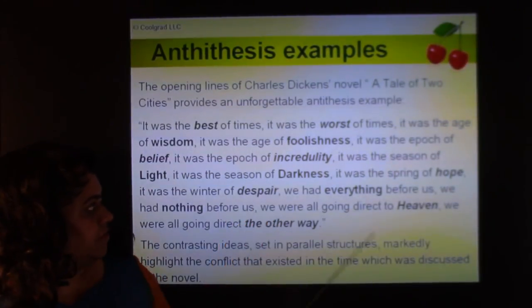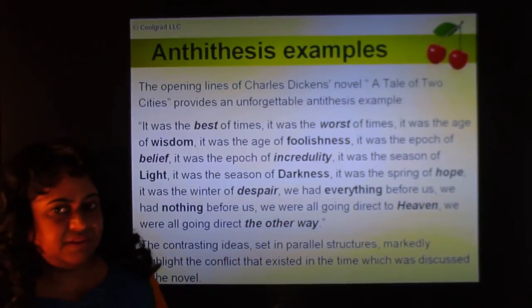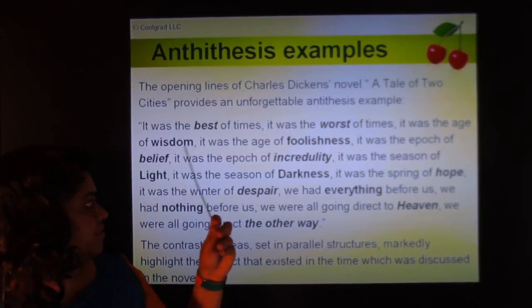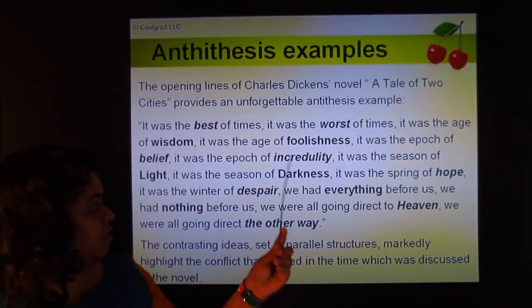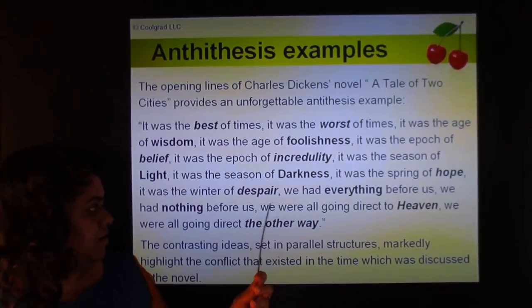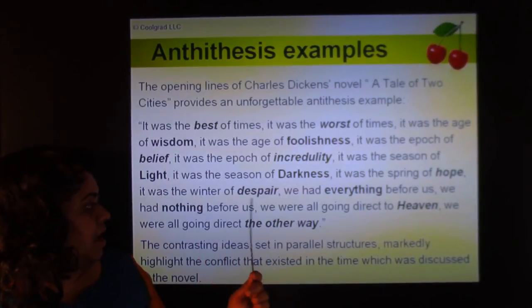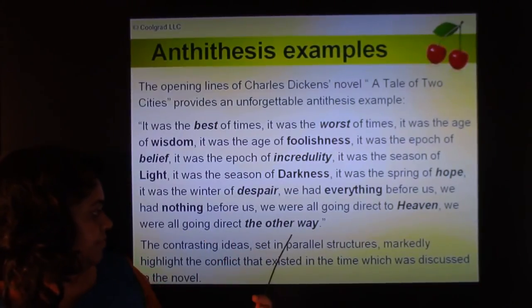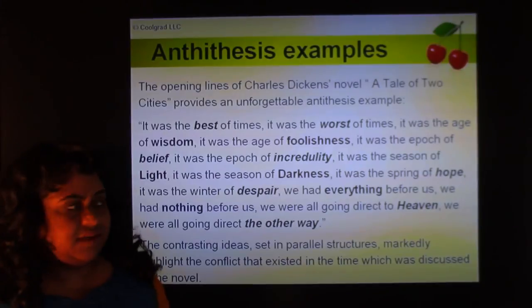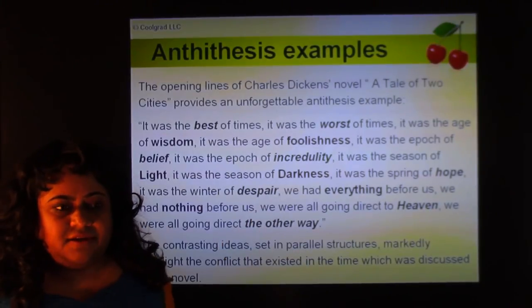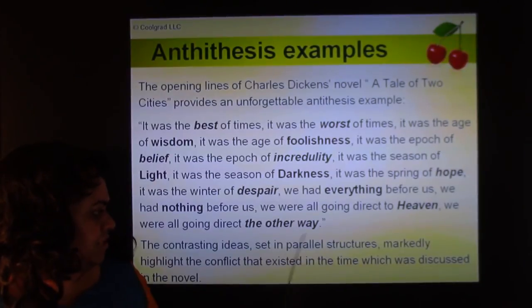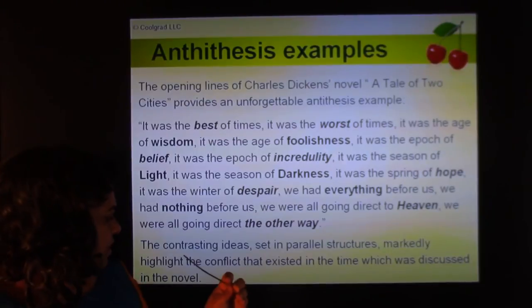In Charles Dickens' A Tale of Two Cities, there is an unforgettable antithesis example: 'It was the best of times, it was the worst of times. It was the age of wisdom, it was the age of foolishness. It was the epoch of belief, it was the epoch of incredulity. It was the season of light, it was the season of darkness. It was the spring of hope, it was the winter of despair. We had everything before us, we had nothing before us.' Dickens used antithesis to highlight the contradictions of the times.